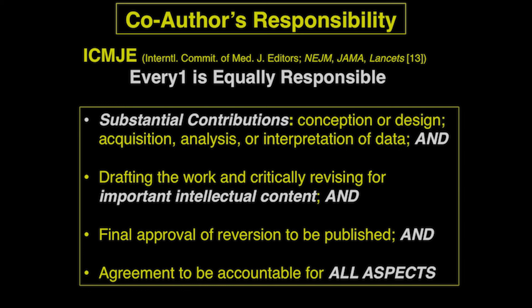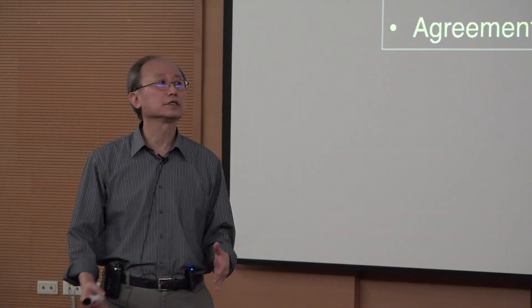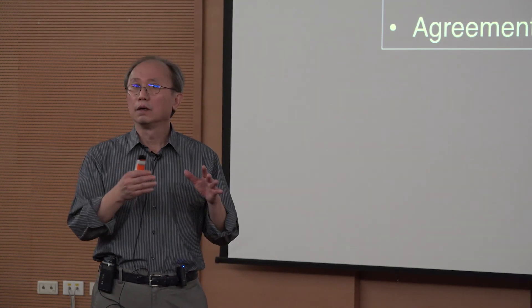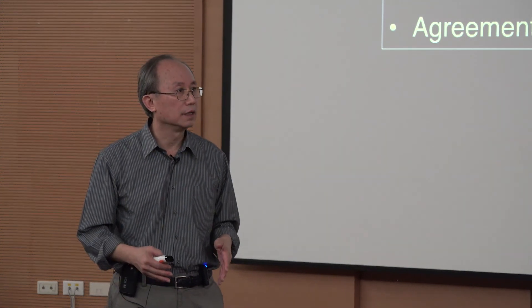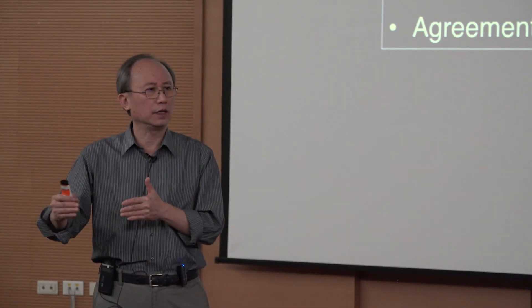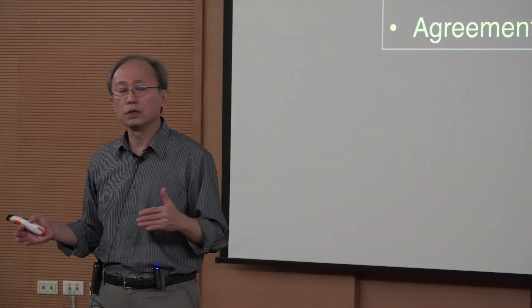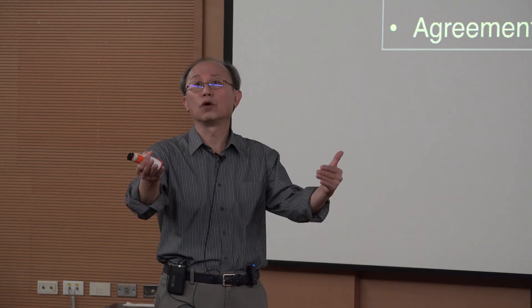I have to say this is an extreme definition of co-authorship. In the case of 5,000 co-authors, there is no way to fulfill all those criteria, because modern science involves multi-disciplinary, multi-national, multi-group collaboration — you cannot possibly know what every other group is doing and critically assess the accuracy and precision of all the data. This is a long-standing debate and I will let you draw your own conclusions.